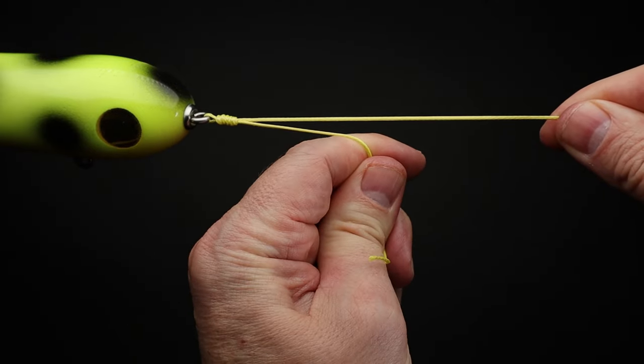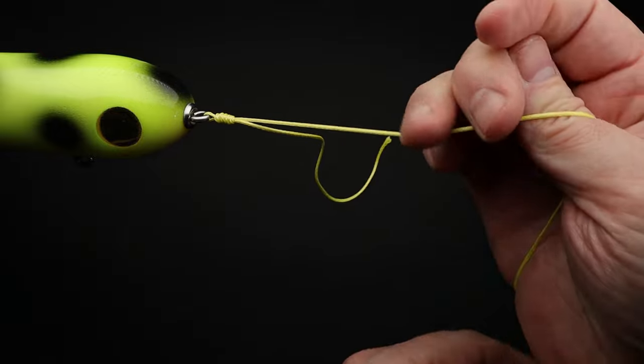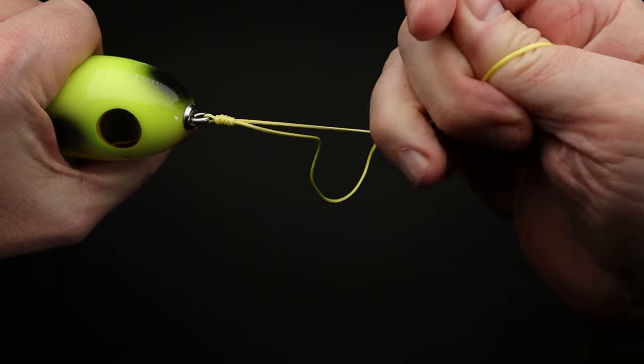Now give a light pull on the end of the line and then switch to the main line and pull firmly to tighten up the knot.